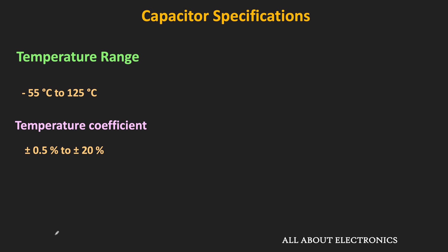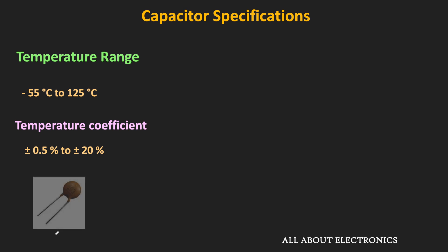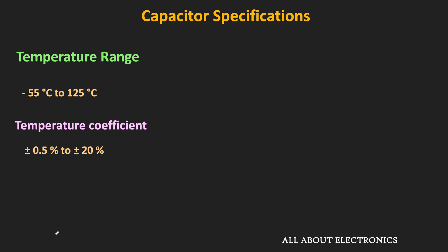Sometimes, for some types of capacitors, this temperature coefficient is also mentioned in ppm per degree centigrade. Apart from temperature, the capacitance value can also change with the operating frequency as well as the biasing voltage. For example, the capacitance of ceramic capacitors — particularly class II ceramic capacitors — may change with the biasing voltage, and this should be taken into account while selecting a capacitor.